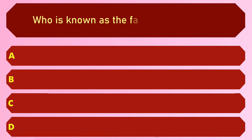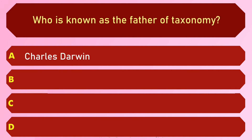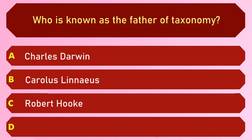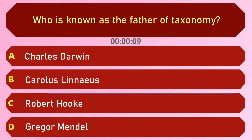Who is known as the father of taxonomy? Options are: A) Charles Darwin, B) Carolus Linnaeus, C) Robert Hooke, and D) Gregor Mendel. The answer is option B, Carolus Linnaeus.